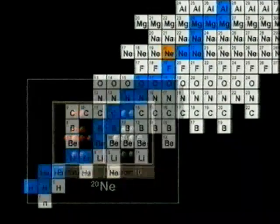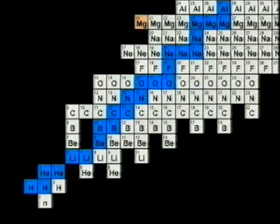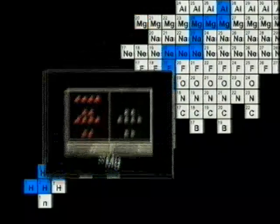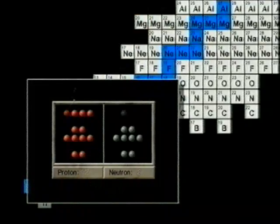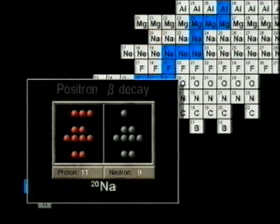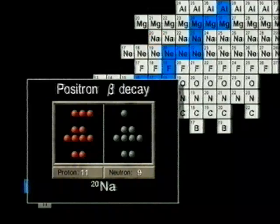On the other hand, if there are more protons than neutrons, as is in the case of Magnesium-20, one of the protons emits a positron and a neutrino, and changes to a neutron. Magnesium-20 then becomes Sodium-20. This process is called positron-beta decay.